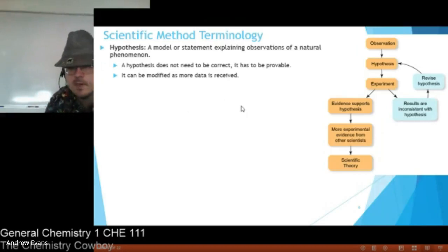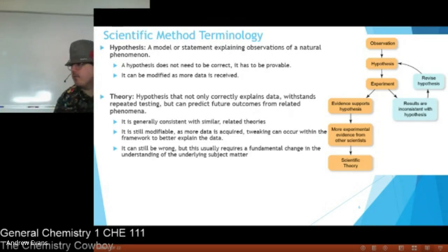Eventually we can build this into a theory. So a theory is a special type of hypothesis. Not only does it correctly explain the data, but it's also going to respond to repeated testing by multiple different scientists. But the most important thing is that it's going to predict future outcomes. So it answers all the experiments we've currently done, but I can think of an experiment that would work with this theory and test it, and I know what the outcome should be before I've even run the experiment. That's the sign of a good theory.